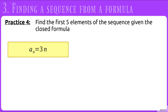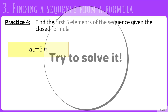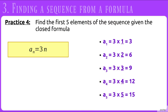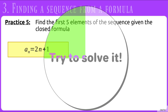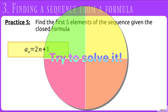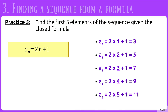Now let's practice with a closed formula. Find the first 5 elements given a sub n equals 3 times n. The result will be 3, 6, 9, 12, and 15. Next, find the first 5 elements given a sub n equals 2n plus 1. Here we're counting by 2's but offset by 1, so instead of 2, 4, 6, 8, 10, we have 3, 5, 7, 9, 11.